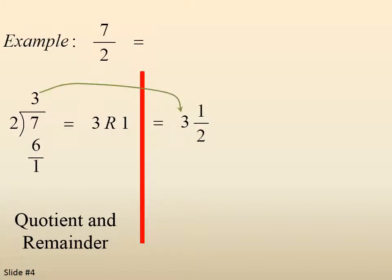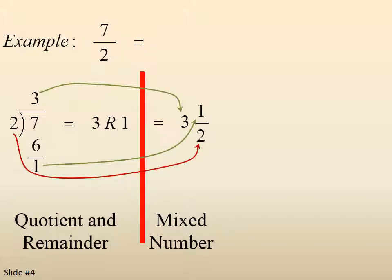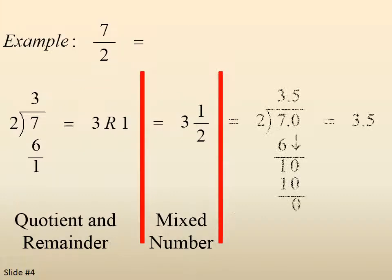We could write it as 3 and 1 half, which is expressing it as a mixed number. Or we could express it as 3.5, which is a decimal.